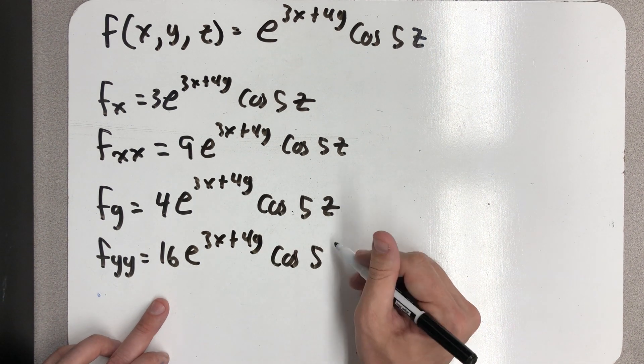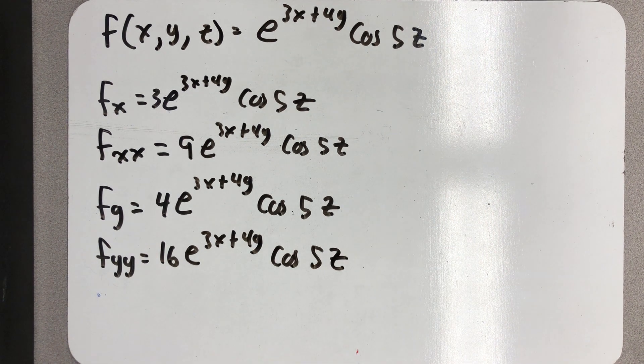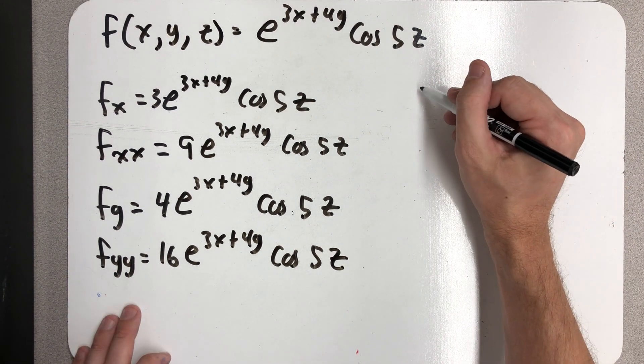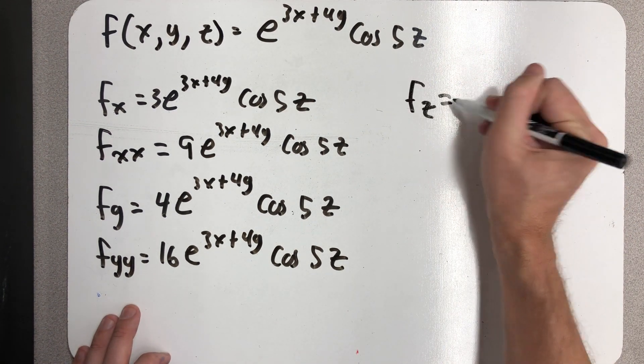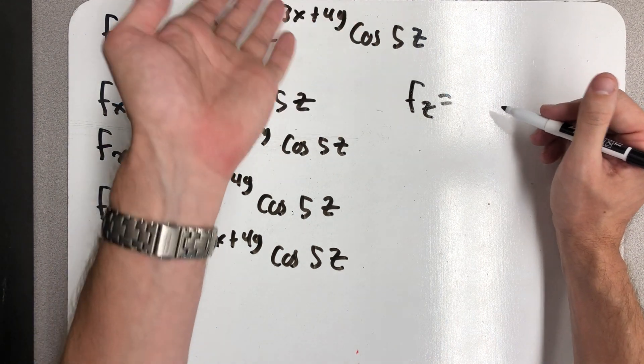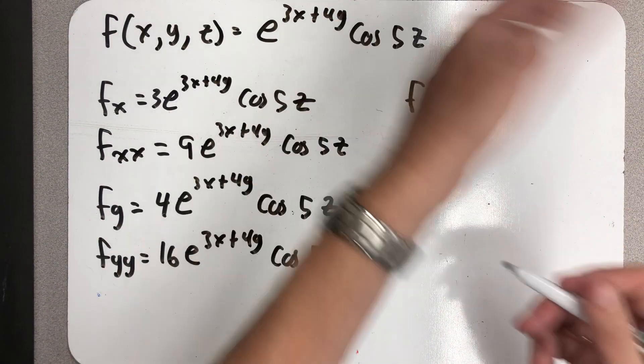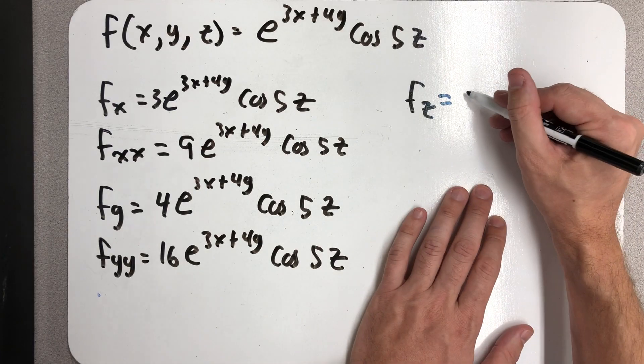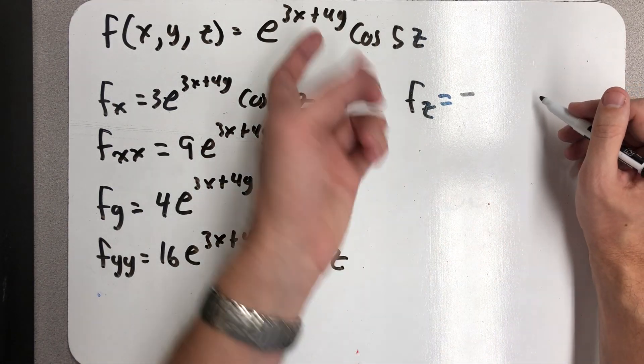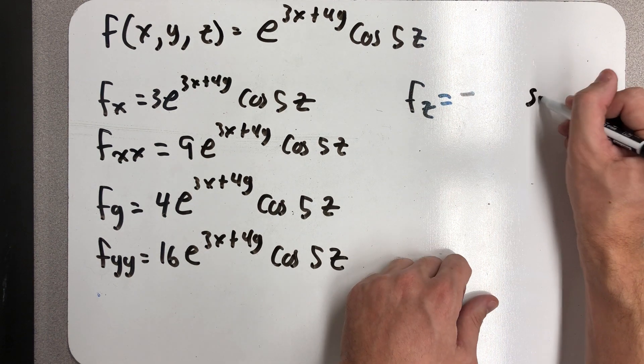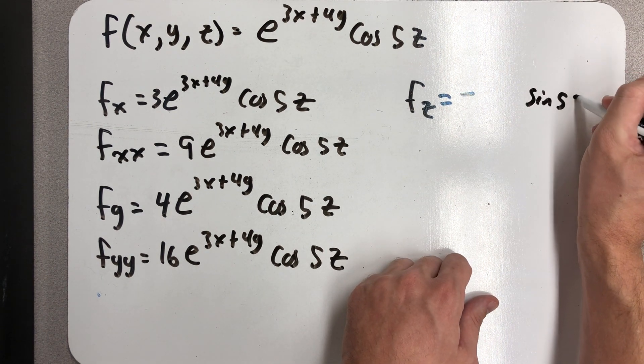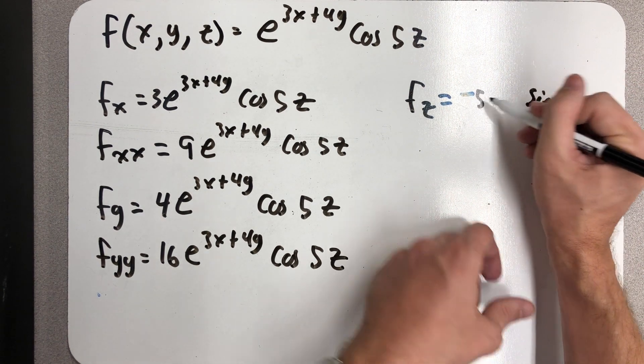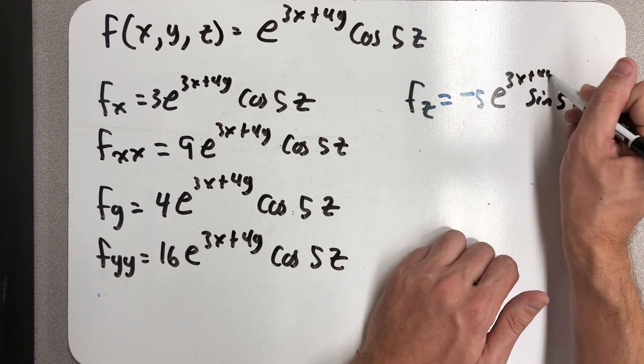Cosine of 5z. And now I need to take a partial with respect to z twice. All right, well now the e^(3x+4y) is a constant. I'm just really taking the derivative of cosine of 5z. Well, that would be the opposite of sine of 5z times 5. So I'm going to write that out front, and then that e^(3x+4y).